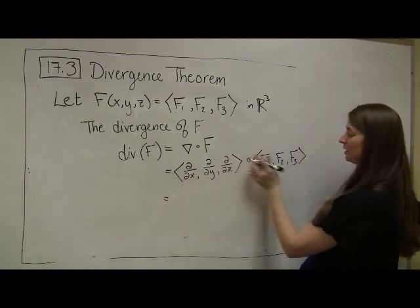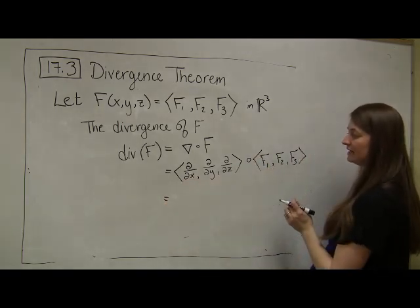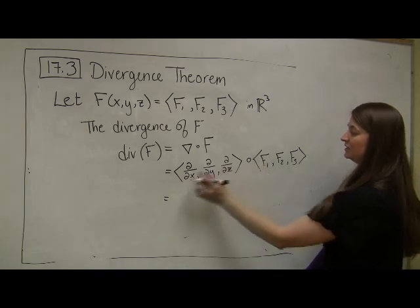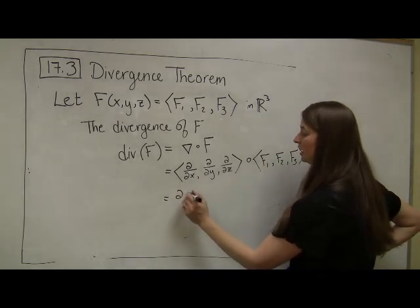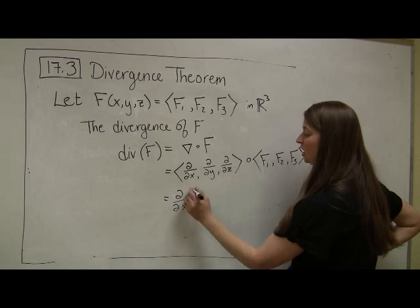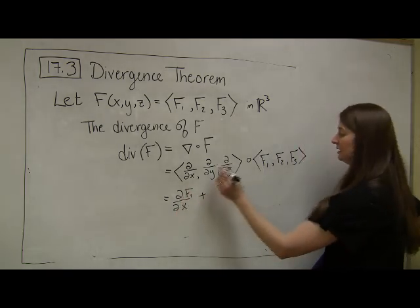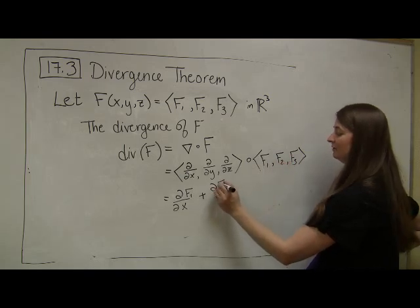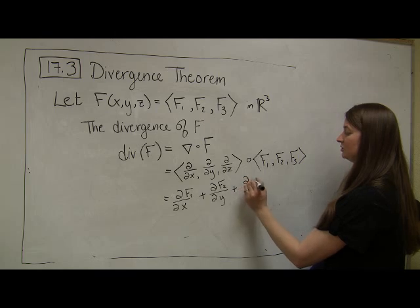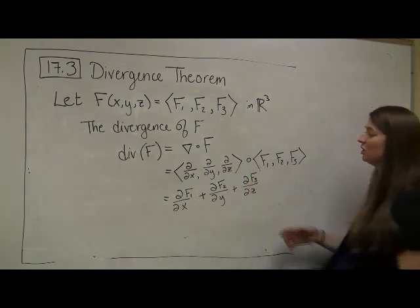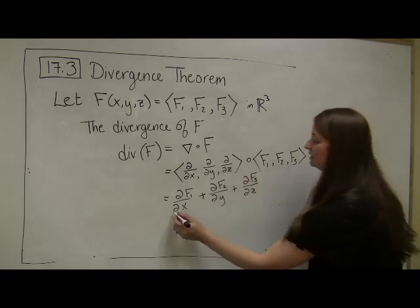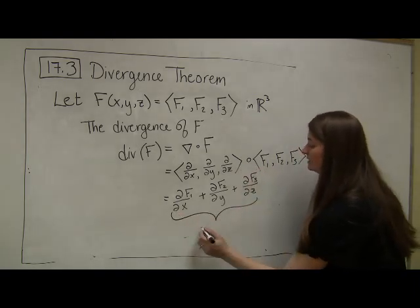If I think of this as a vector operating on my function F1, F2, F3, what does this dot product give me? It's the product of the first terms, and in this case, that product is going to be the operation of the partial derivative with respect to x on the first component function, plus the partial derivative of F2 with respect to y, plus the partial derivative of F3 with respect to z. Recall, because this is a dot product, this is a sum.